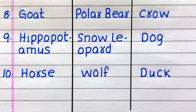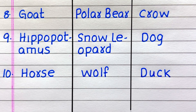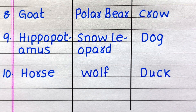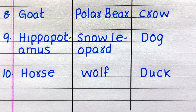9th name of a herbivore, 10th Horse. 9th name of a carnivore is Snow Leopard. 10th Wolf. 9th name of an omnivore is Dog. 10th Duck.